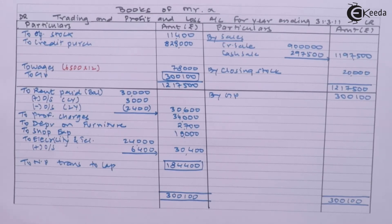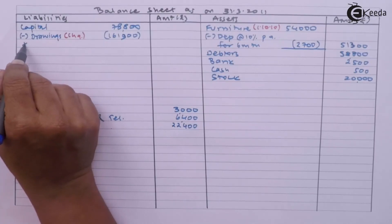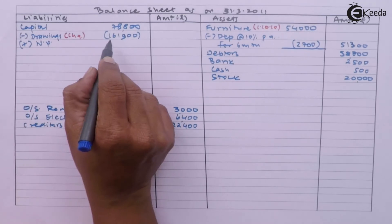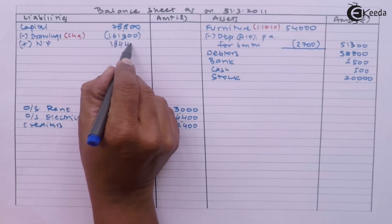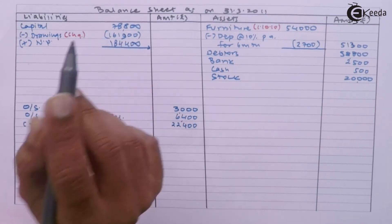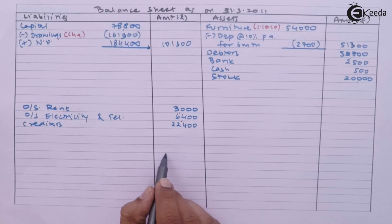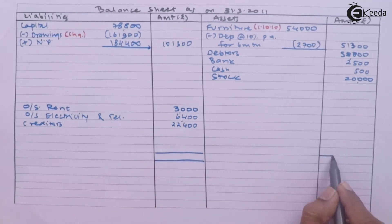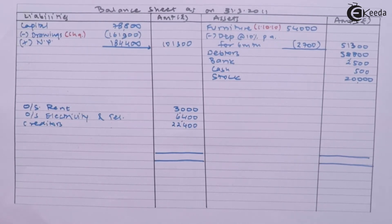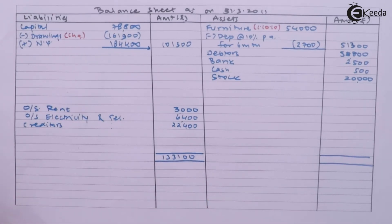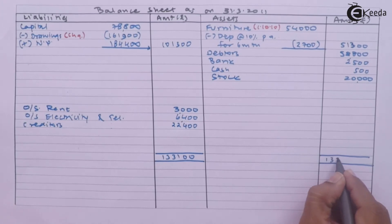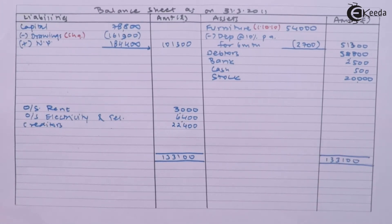Students, my net profit is 1,84,400. It will be added to the capital. Remaining capital is 1,01,300. In this way, the balance sheet also tallies.